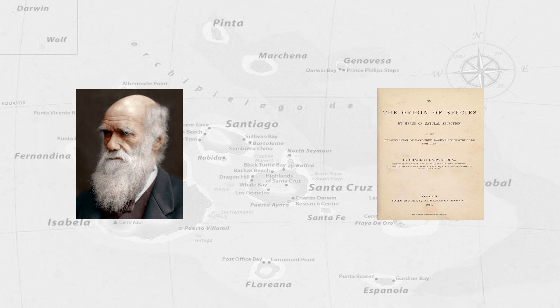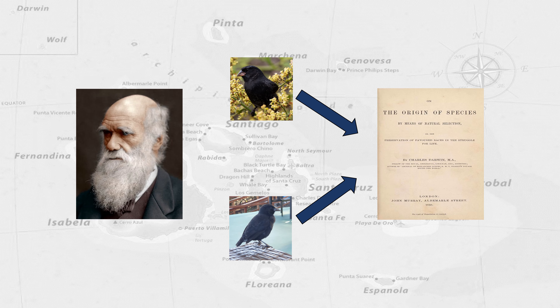It is widely thought that his evolutionary theory was sparked by the finches, aptly named Darwin's finches, that inhabited the islands due to their variability in beak morphology. However, this is a very common misconception.